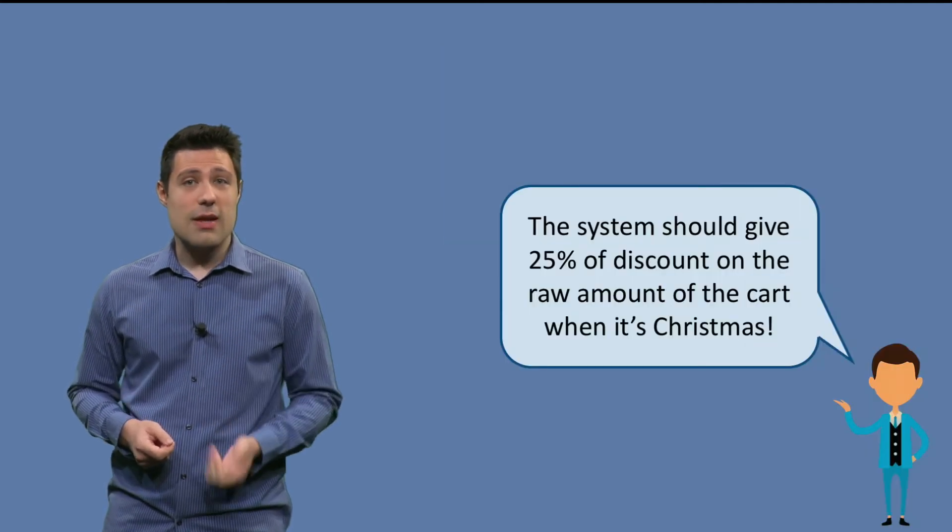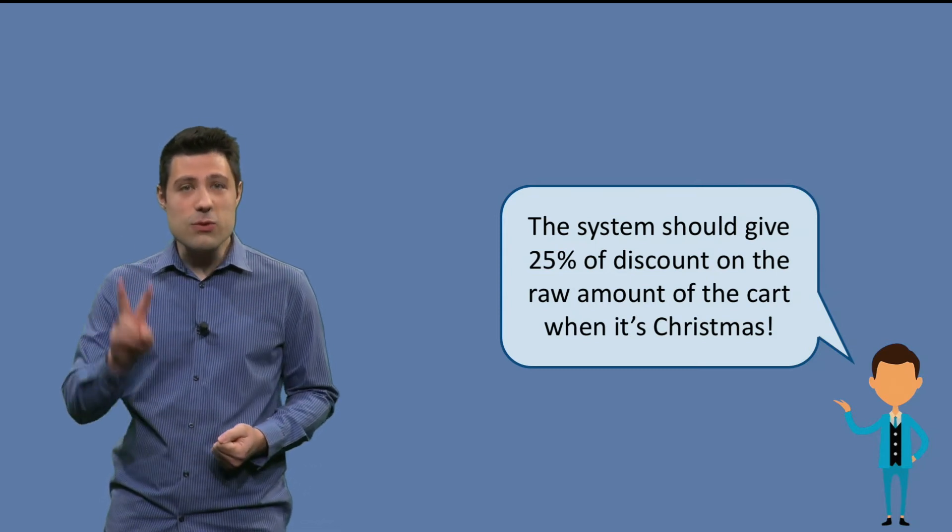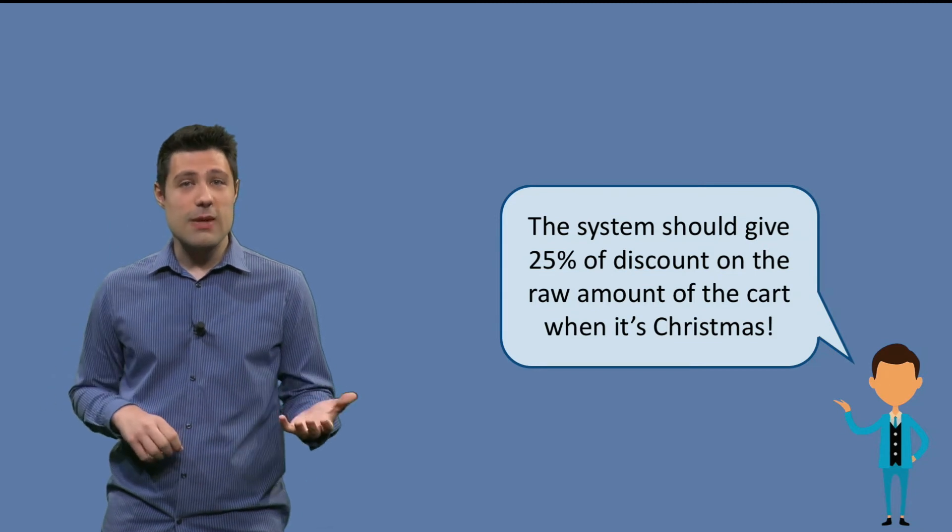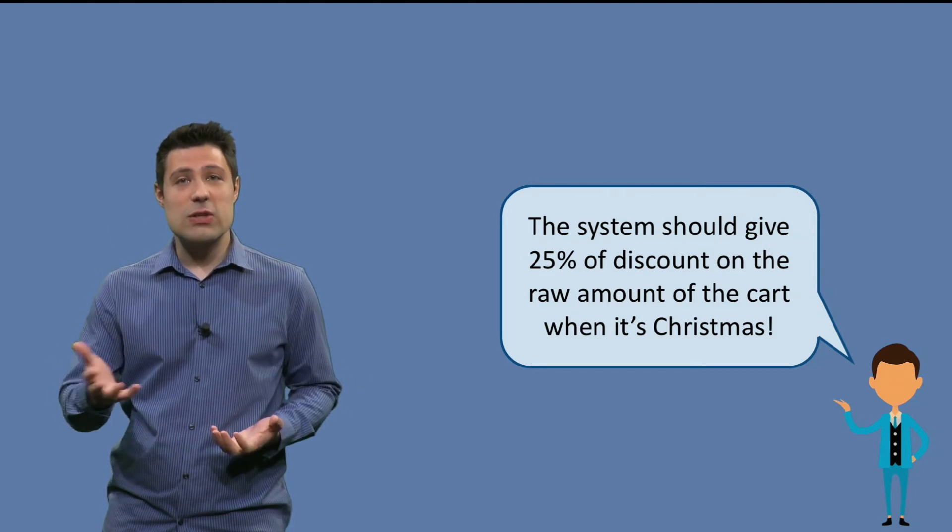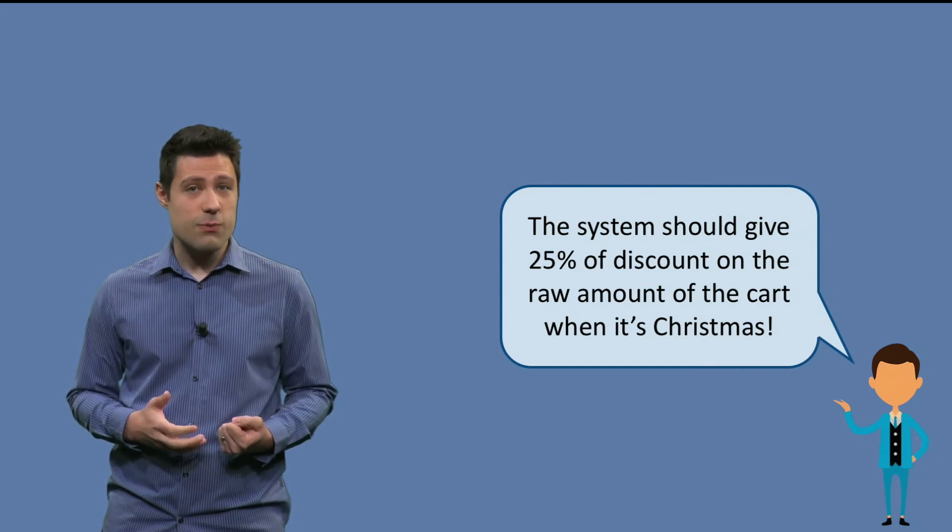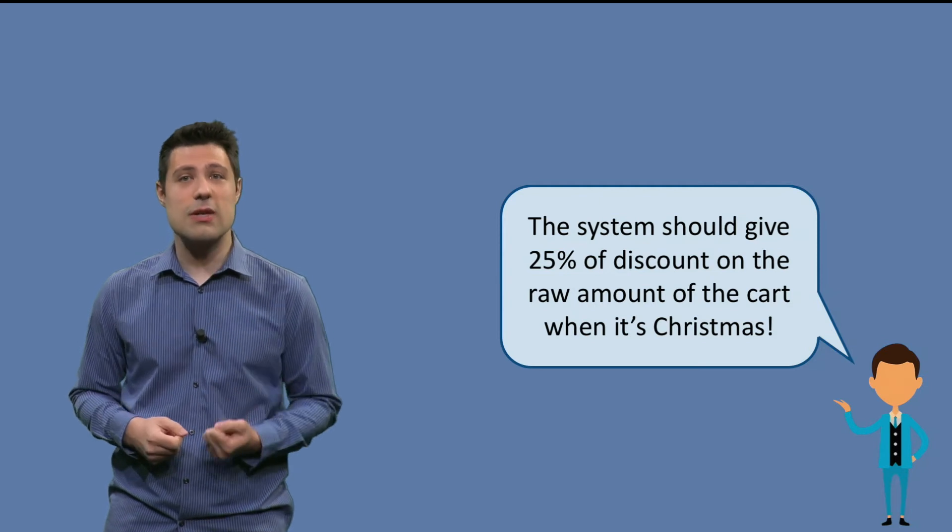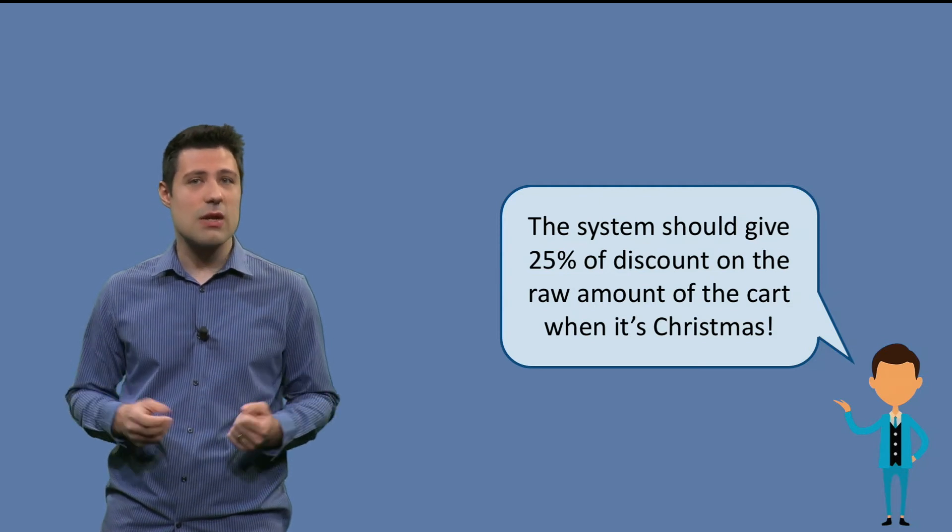To be more concrete, let's get to an example. Let's suppose we are testing this program and this program receives two parameters. One of them is the date and the other one is the raw amount. If it is Christmas, the program then gives 25% discount in the raw amount. If it is not Christmas, then the program doesn't apply any discount to the final value.